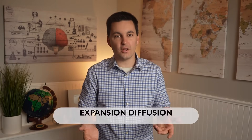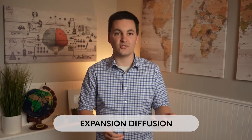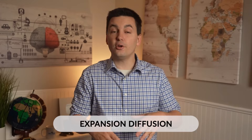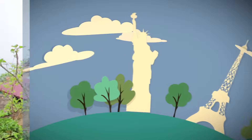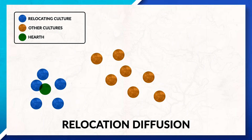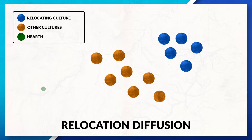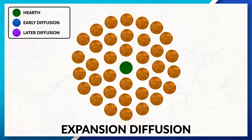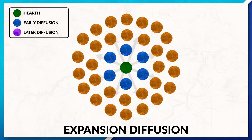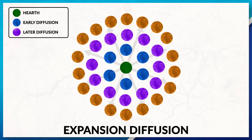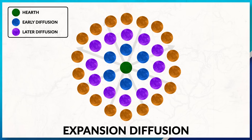Expansion diffusion, on the other hand, does see the addition of more people practicing or taking on the cultural trait. Here, the hearth often remains strong as the cultural trait, group of people, or items expand outwards from the hearth. When trying to remember the difference between relocation and expansion diffusion, just think about the numbers. If we are seeing the same number of people practicing the culture as diffusion happens, it's most likely relocation diffusion. But if we are seeing more people practicing the culture, causing the amount to increase, it's most likely expansion diffusion.